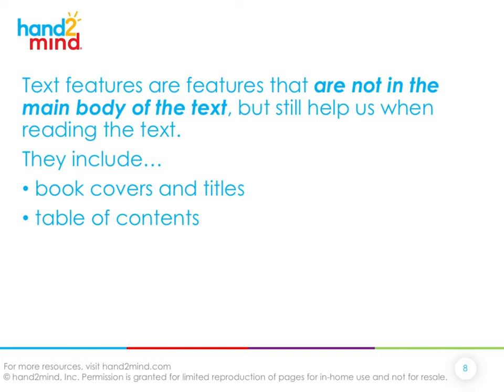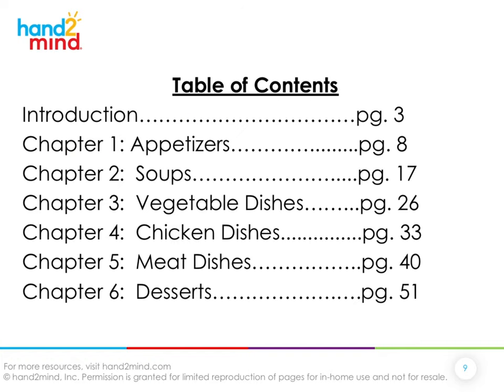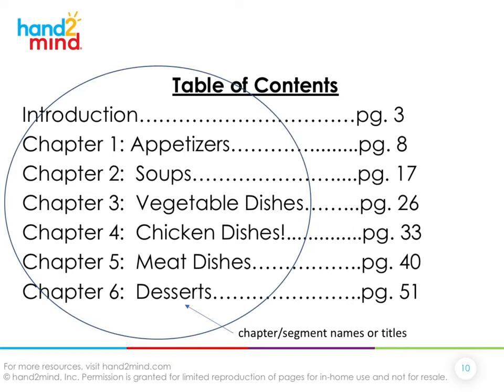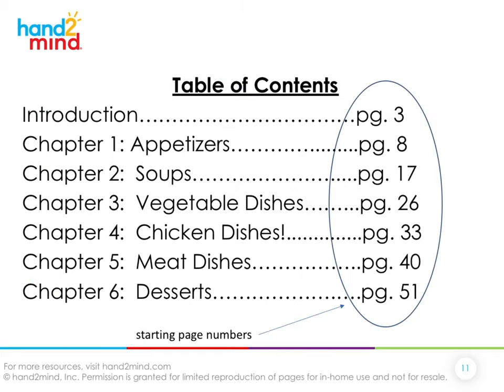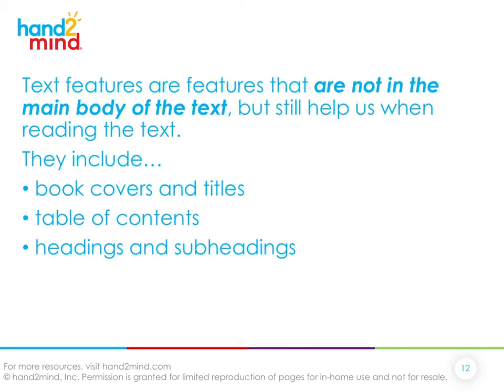Text features also include the table of contents, which is usually at the beginning of a book. It gives you an overview of what you're going to be reading — chapter or segment names and titles — and it tells you the starting page number. It doesn't tell you all the page numbers of that entire chapter, but it will tell you what page that chapter or segment begins.